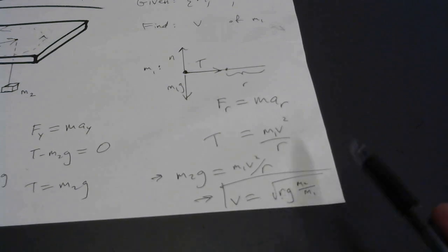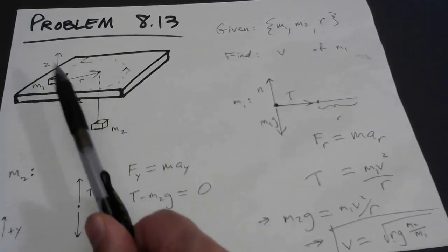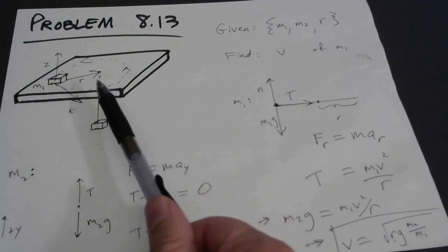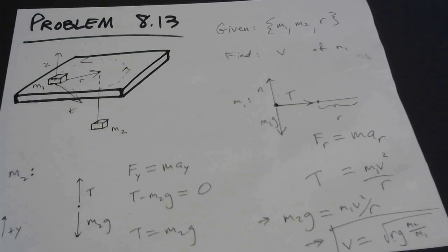Does it make sense? The bigger the circle they're moving in, the faster mass one would have to be moving. If you're moving in a large circle, you're almost moving in a straight line, meaning low acceleration, so not much tension would be required. Like when you make a very gradual turn in a vehicle, your acceleration is rather low and the centripetal force is low. So the bigger the circle, the faster M1 has to go to compensate.